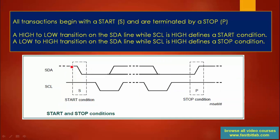What exactly is the stop condition? Whenever the master wants to generate the stop condition, it makes a low-to-high transition on the SDA when the clock is high, and that is called the stop condition. After the stop condition you can see that both SDA and SCL are released — they go to the pull-up state, meaning both lines are pulled high. That means the master has released the bus.